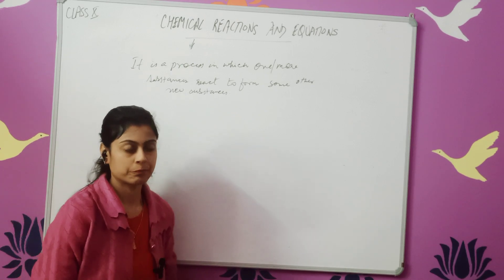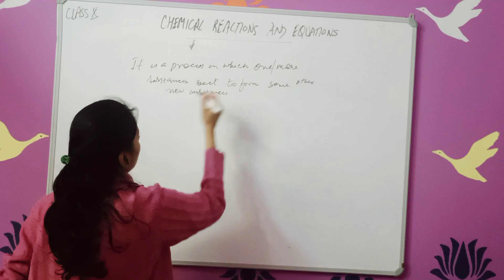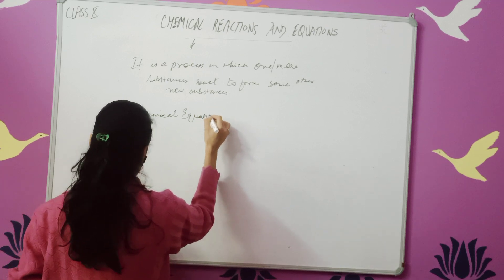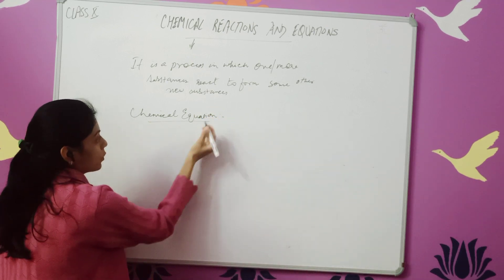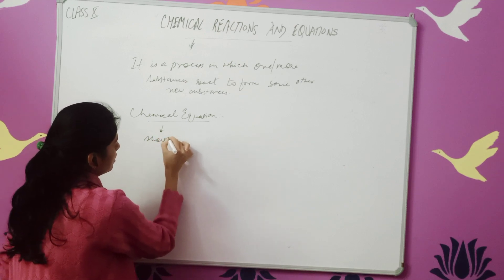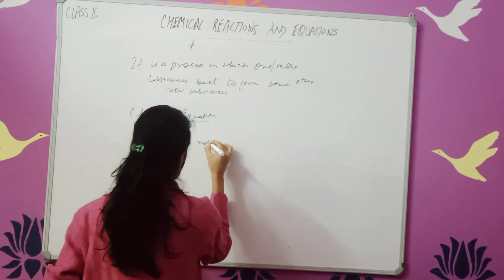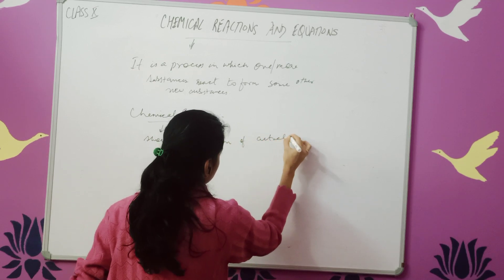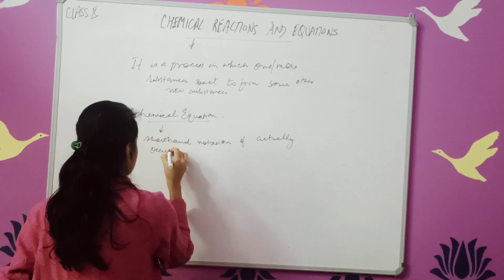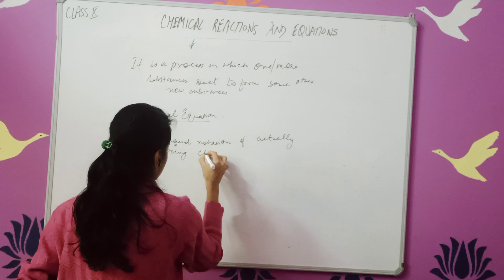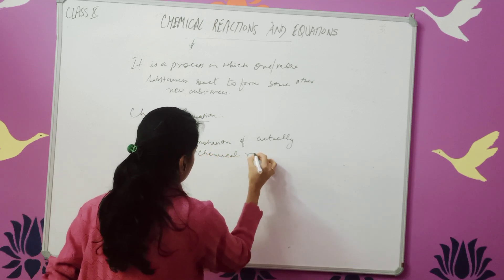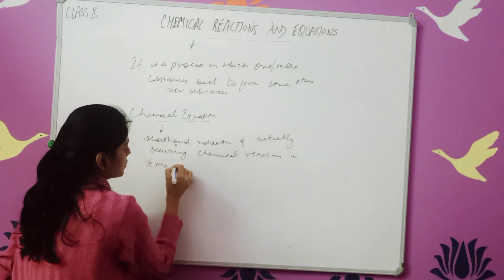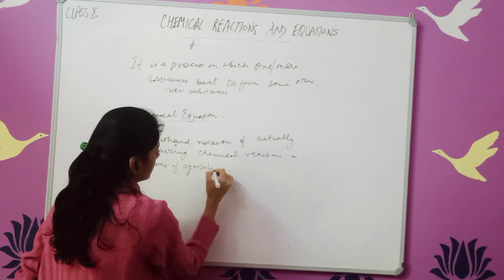Now the second question is: what is a chemical equation? A chemical equation is a shorthand notation of actually occurring chemical reactions, expressed in terms of symbols.